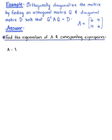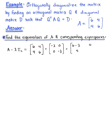We start by finding matrix A minus lambda times the 2×2 identity matrix. Matrix A is [6, 4; 4, 6], and we add the 2×2 matrix [-λ, 0; 0, -λ]. Combining like terms, we are left with [6-λ, 4; 4, 6-λ].